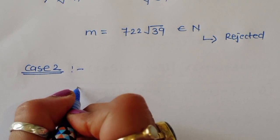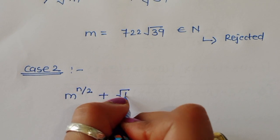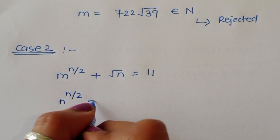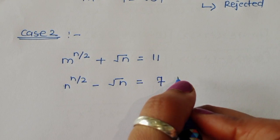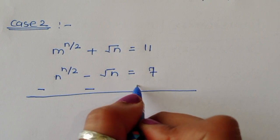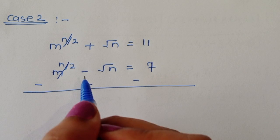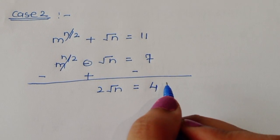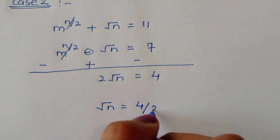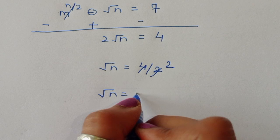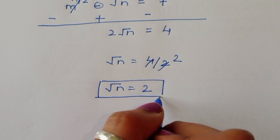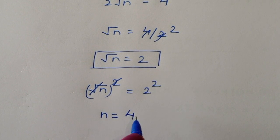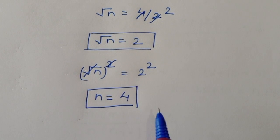For Case 2: m power (n/2) plus square root of n equals 11 (equation 1), and m power (n/2) minus square root of n equals 7 (equation 2). Subtracting equation 2 from equation 1: 2 times square root of n equals 4, so square root of n equals 2. Squaring both sides: n equals 4. This is the value of n.